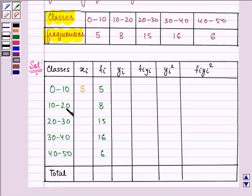First of all we will be finding xi which is lower limit plus upper limit divided by 2. So here it would be 5, 15 and so on with a difference of 10.